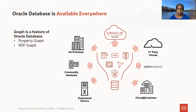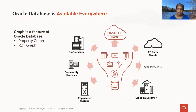Graph is a feature of Oracle Database, and Oracle Database has a variety of deployment options. You can deploy Oracle Database on-premises, in Oracle Cloud, in third-party clouds, or in Cloud at Customer where Oracle manages infrastructure but the hardware is physically in your data center. When deploying on-premises, you have the option of engineered systems or commodity hardware.